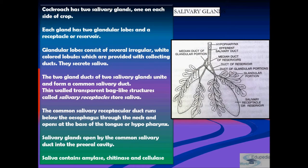The digestive system is bifurcated into alimentary canal — which includes foregut, midgut, and hindgut — and digestive glands, which include the salivary glands. There are two salivary glands, one on each side of the crop.